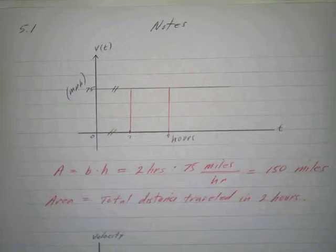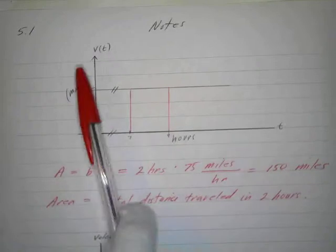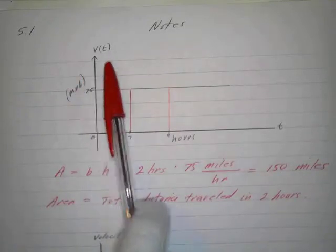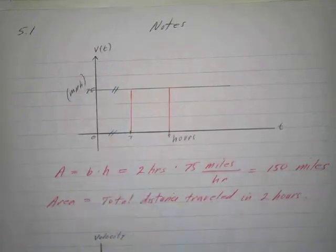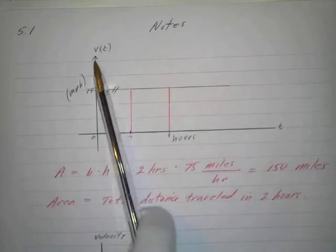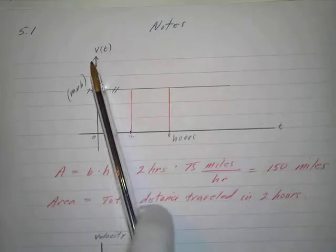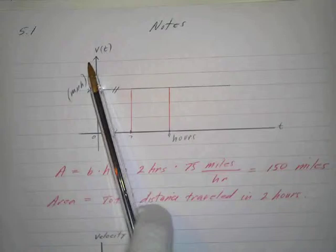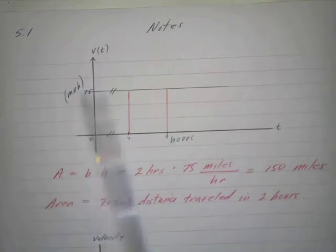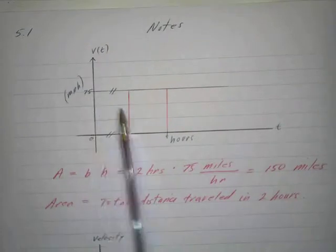Now we're going to go the other direction. Instead of starting with a position curve, we're going to start talking about a velocity curve. And we're not going to be talking about the slope — we're going to talk about what happens if we have a velocity. Let's say we have a constant velocity.